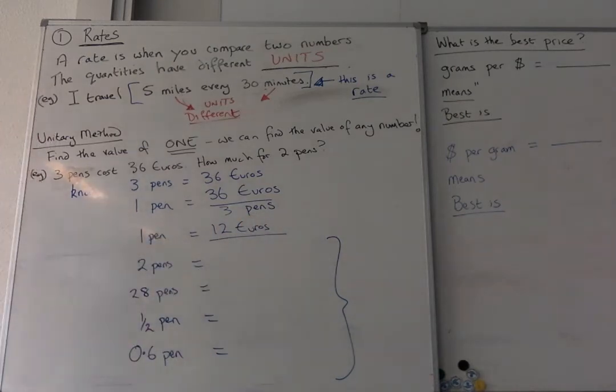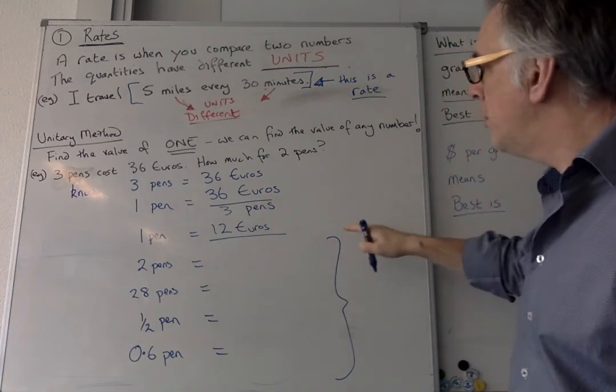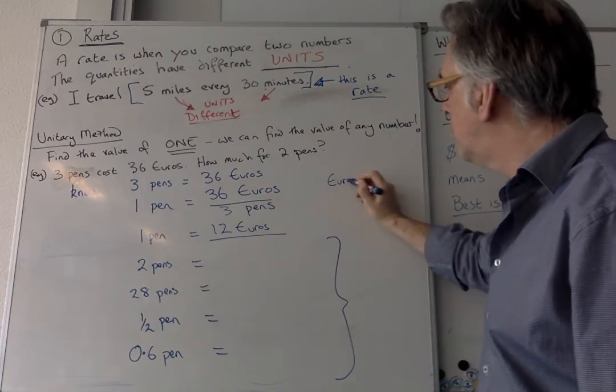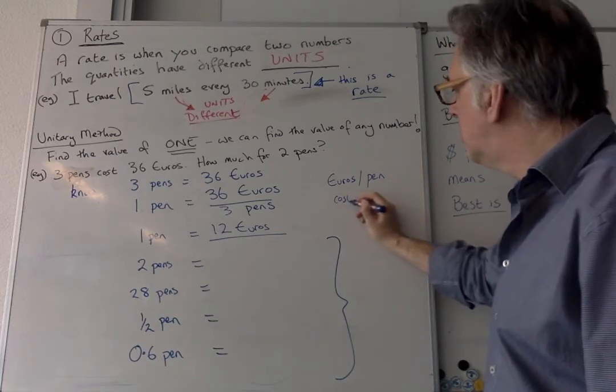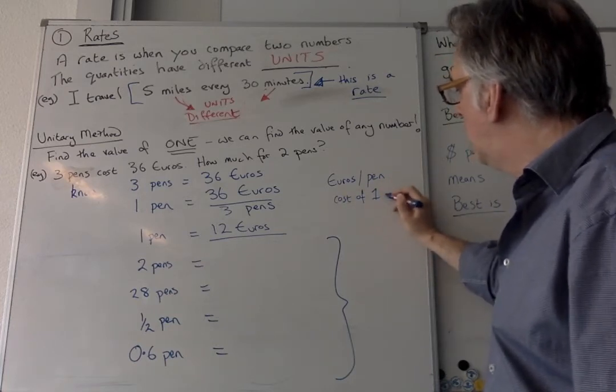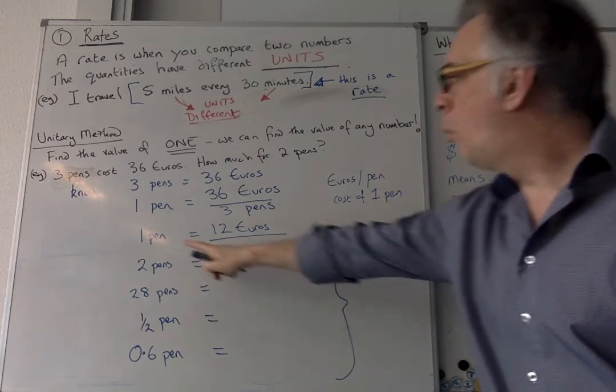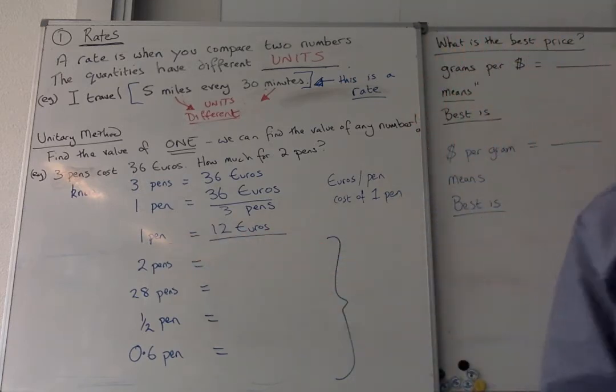Now, when we do this sort of calculation and we've got this slash mark, what you've actually worked out is what we call euros per pen, or it's the cost of one pen. So one pen is equal to 12 euros.